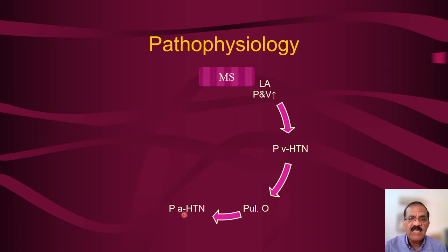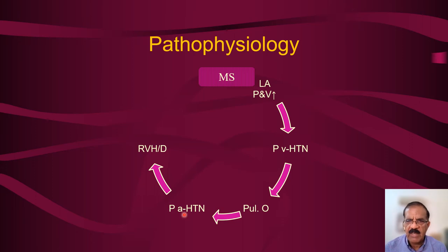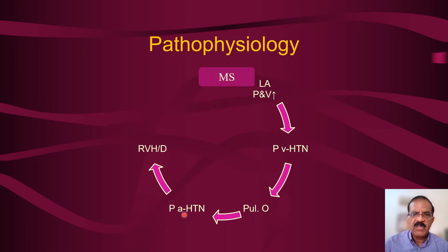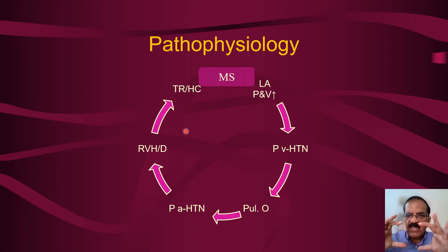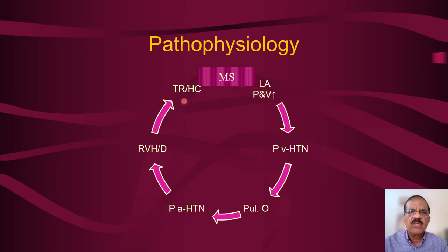Pulmonary arterial hypertension becomes progressively more irreversible and causes right ventricular hypertrophy and dilatation. We are talking about a patient who has had mitral stenosis for a very long time, unfortunately undiagnosed or untreated. Once the right ventricle dilates, there could be tricuspid regurgitation — the tricuspid valve itself may be normal, but since the right ventricle is dilated, the annulus is stretched so the cusps do not meet, causing tricuspid regurgitation and hepatic congestion.